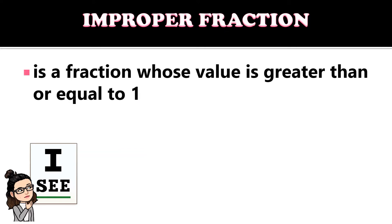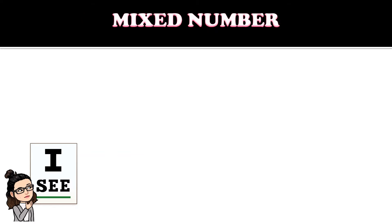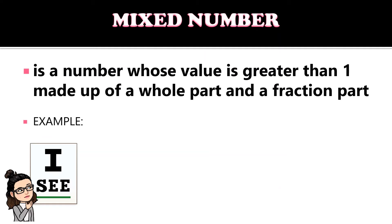An improper fraction is a fraction whose value is greater than or equal to one — example, four-thirds — where the numerator is greater than or equal to the denominator. A mixed number is a number whose value is greater than one, made up of a whole number and a fractional part — example, one and two-thirds.